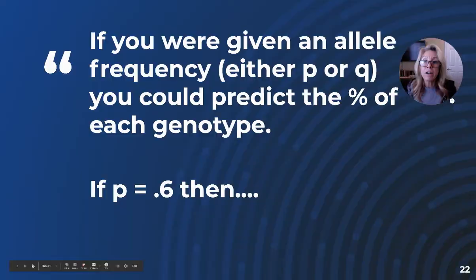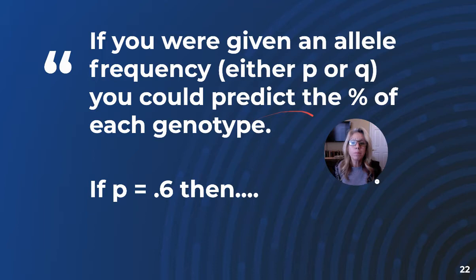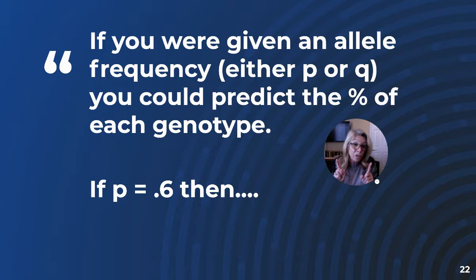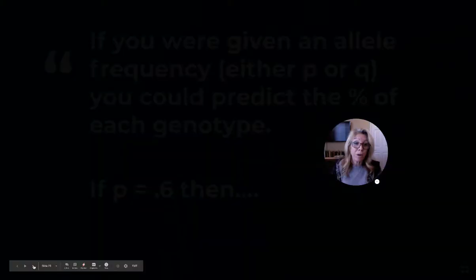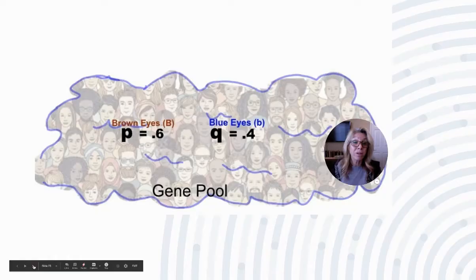If you're given an allele frequency — either P or Q — you can predict the percentage of all your genotypes. For instance, if P = 0.6, you know the frequency of P in your gene pool is 0.6. Then Q must be whatever's left out of 100% — so Q = 0.4.